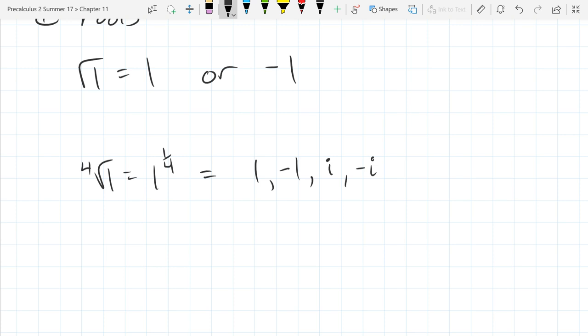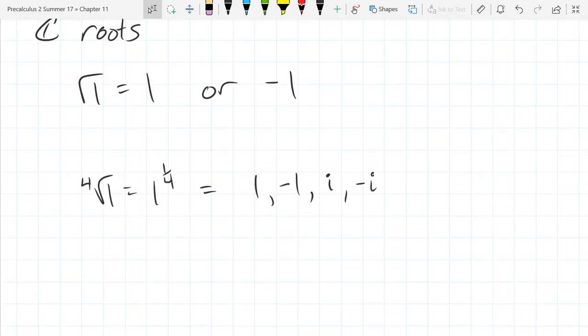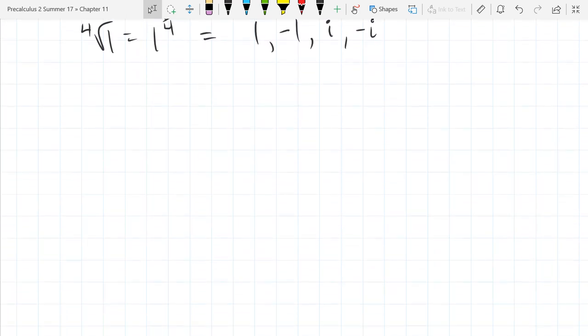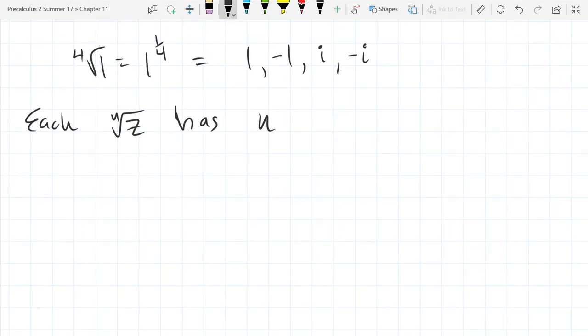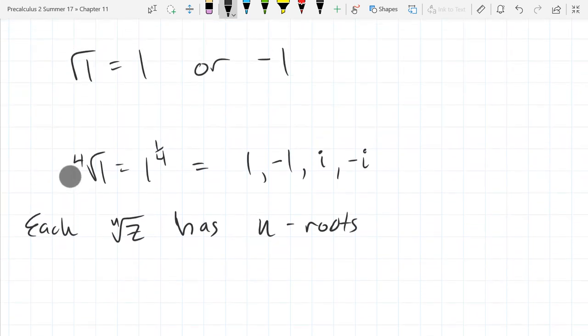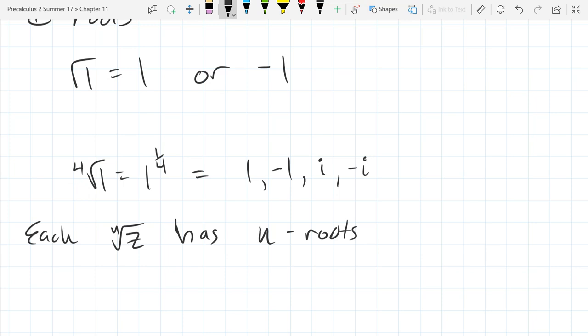Same thing happens with negative i. So there's four roots of, or the fourth root of 1, there's four roots for that. So basically whenever you have an nth root, there's going to be n roots. So each z to the 1/n has n roots.